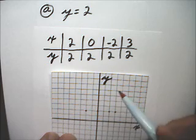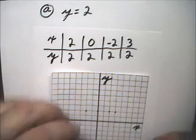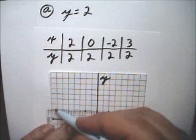So the equation, or the graph of the equation y equals 2, is this horizontal line, where y always equals 2.